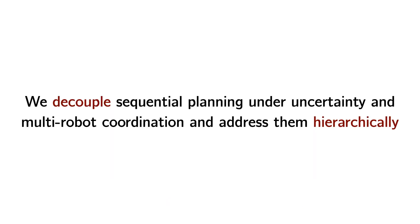Our key idea is to decouple the algorithmic challenges of sequential planning under uncertainty and multi-robot coordination, and address them at separate levels. In contrast, prior works attempted the intractable joint problem and required simplifying approximations or heuristics. We decompose and recombine in a manner that circumvents some complexity without sacrificing solution quality.